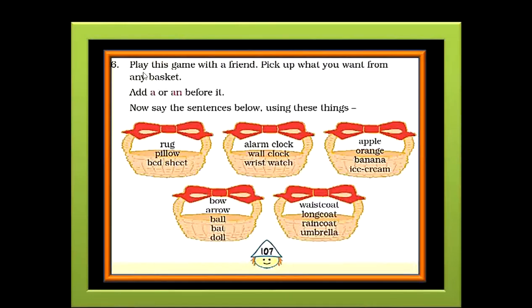Here is the next exercise children. Play this game with a friend. Pick up what you want from any basket. Add A or an before it. Now say the sentences below using these things. Here there are five baskets, each with some words. You need to add A or an before these words. Recently we learned about vowels. The five vowels in English language are A, E, I, O, U. So apart from these five letters, all the letters in the alphabet are consonants. So we have 21 consonants and five vowels.